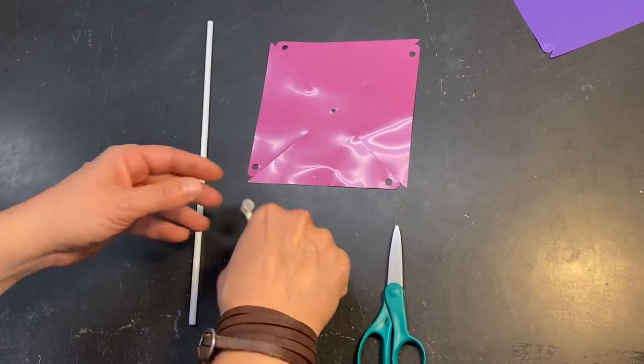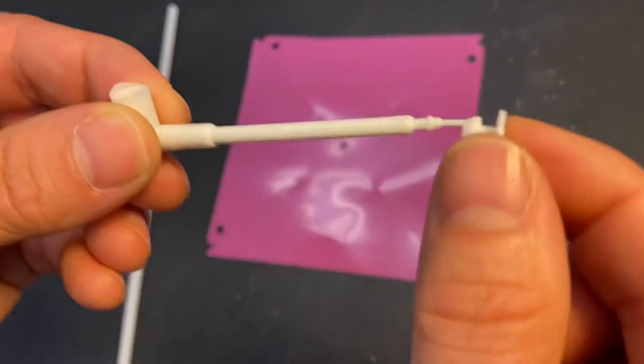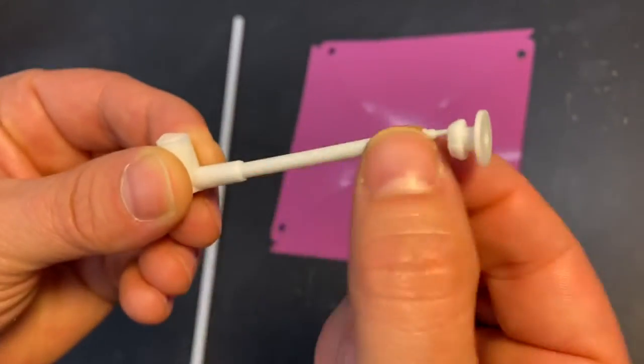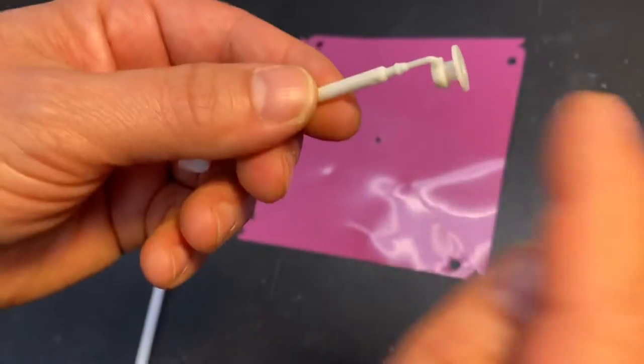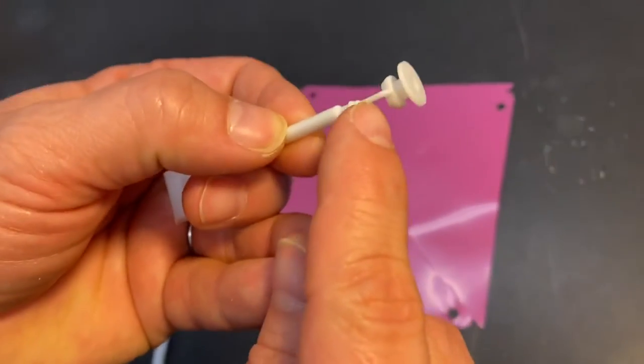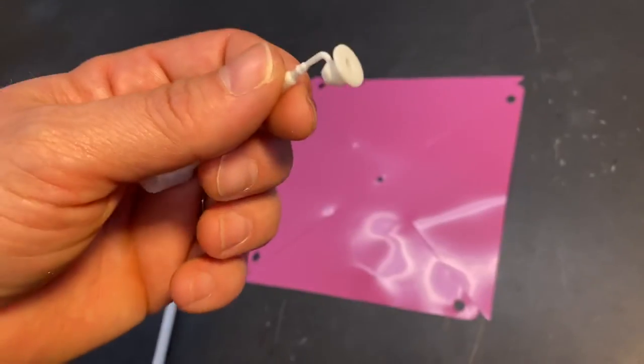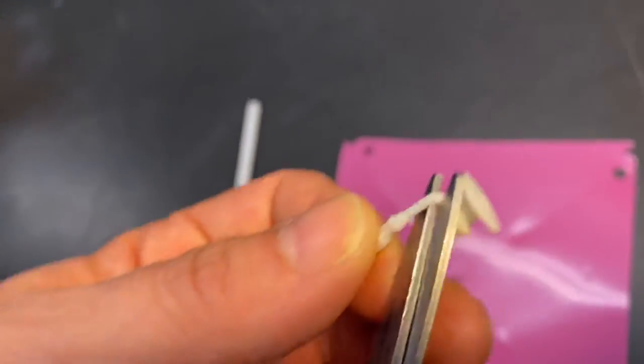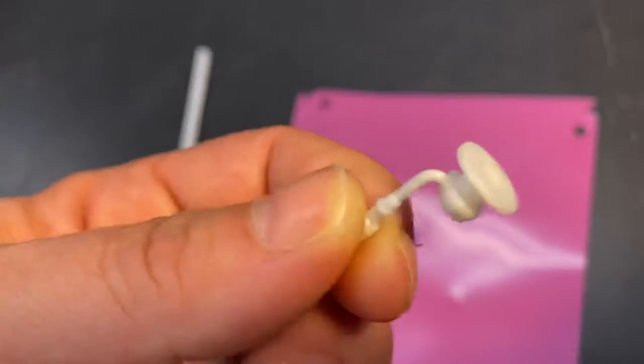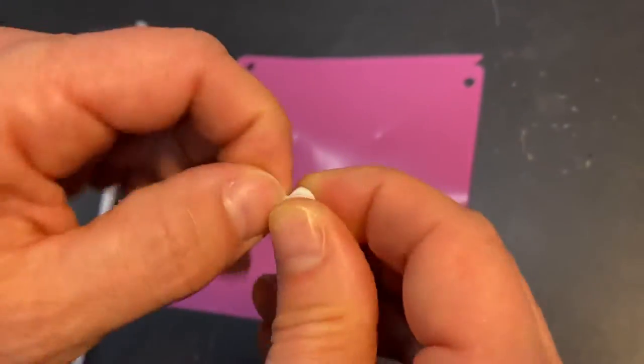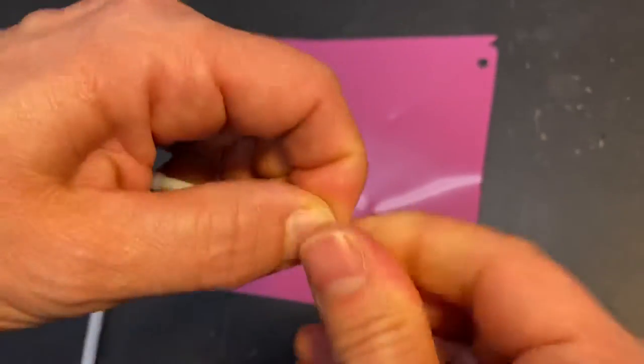So the first thing we need to do is we're actually going to take this part, which is the button piece connected to the axle on which the pinwheel will spin. And we need to separate them. There's a little piece of plastic connecting the two. So if you have scissors, I would say clip it right next to this button part. But if you don't have scissors, you can just twist this until the plastic gets so thin that it will break off.